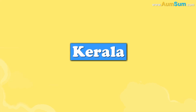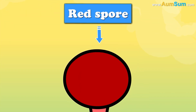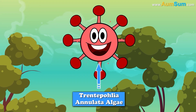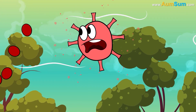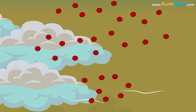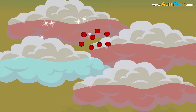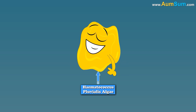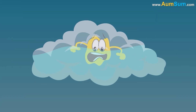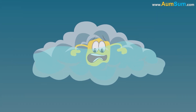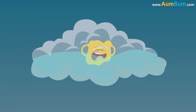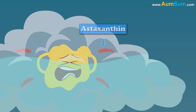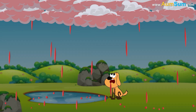Secondly, in Kerala, red spores of Trentepohlia annulata algae get carried away by winds and mix with falling water droplets, thus causing blood rain. Lastly, in Zamora, Haematococcus pluvialis algae get caught in rain clouds; as a result, they get stressed and produce a red pigment called astaxanthin, thus causing blood rain.